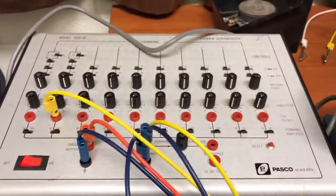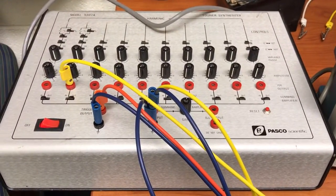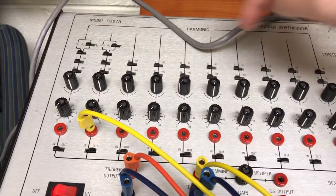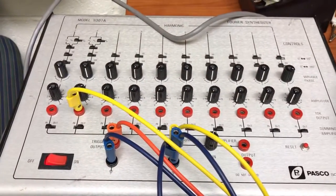Okay, so here's a quick example with the Fourier synthesizer. You'll notice all the different channels here for the increasing harmonics.